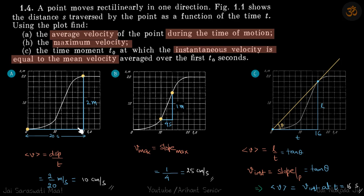Average velocity is displacement upon time. Displacement is 2 meters and time is 20 seconds. We get the answer.